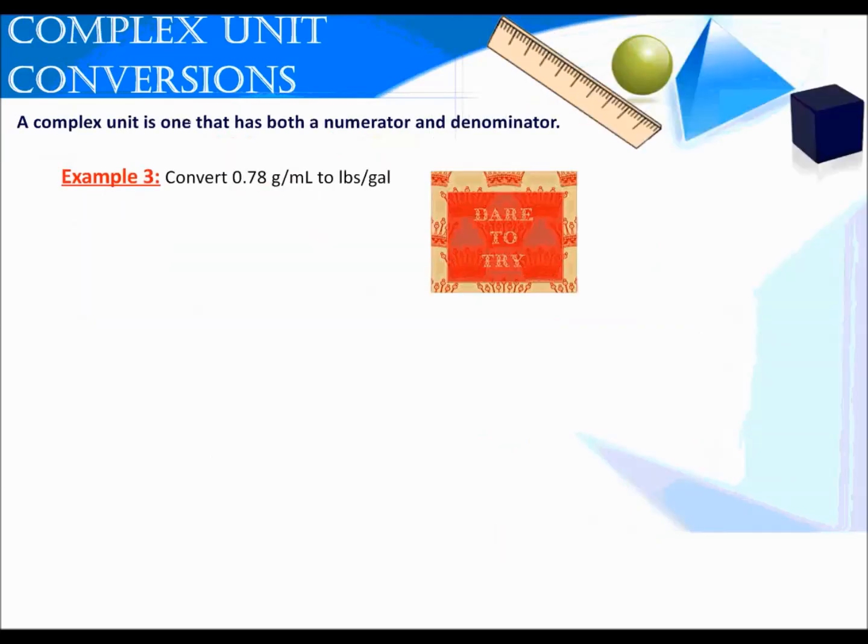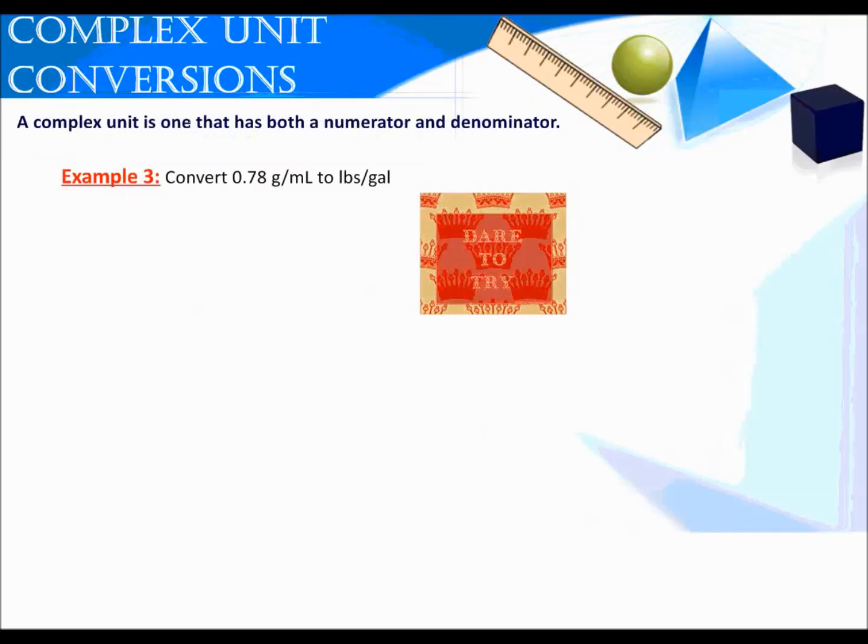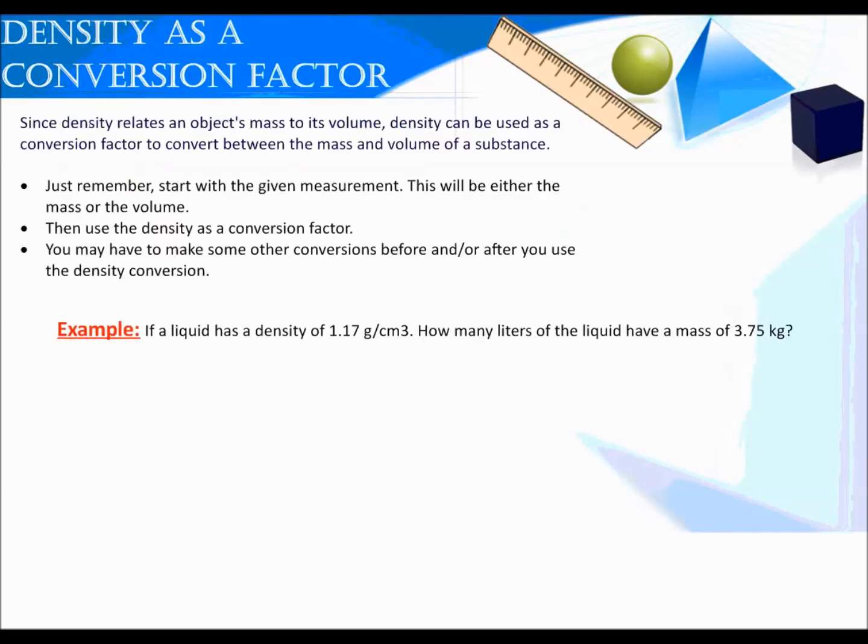Example 3 says convert 0.78 grams per milliliter to pounds per gallon. I encourage you to try this on your own. We will check it tomorrow in class to make sure you're on the right track.